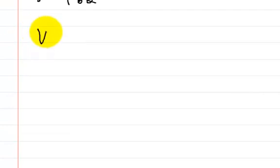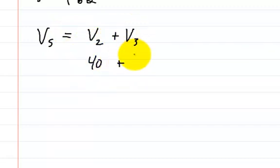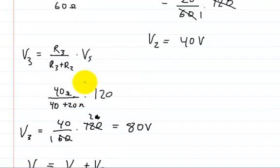So we could just say the total voltage of the supply for that branch is actually V2 plus V3. And V2 was 40 volts and V3 is 80 volts. And that equals 120. So that checks out. So now we have the voltage on each one of the resistors. So now we can solve for the current going through that branch.